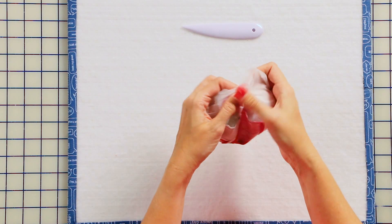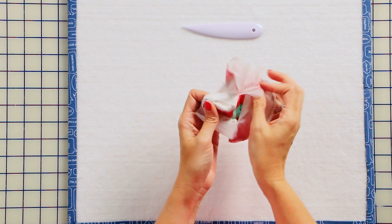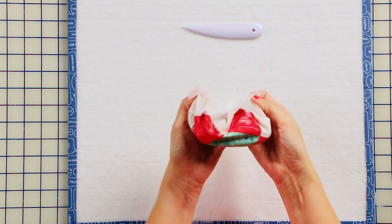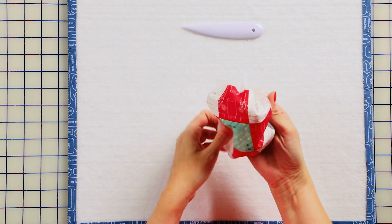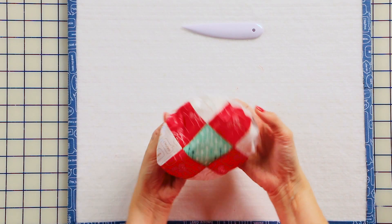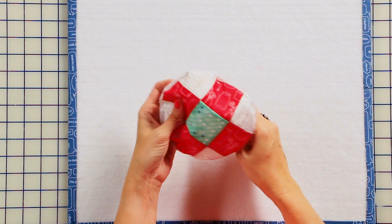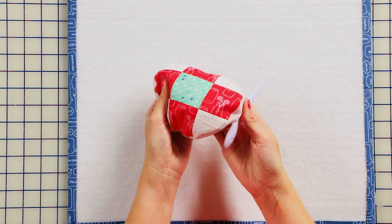Turn it right sides out. Use the Dritz point turner to pull your points out, and then we're going to press.